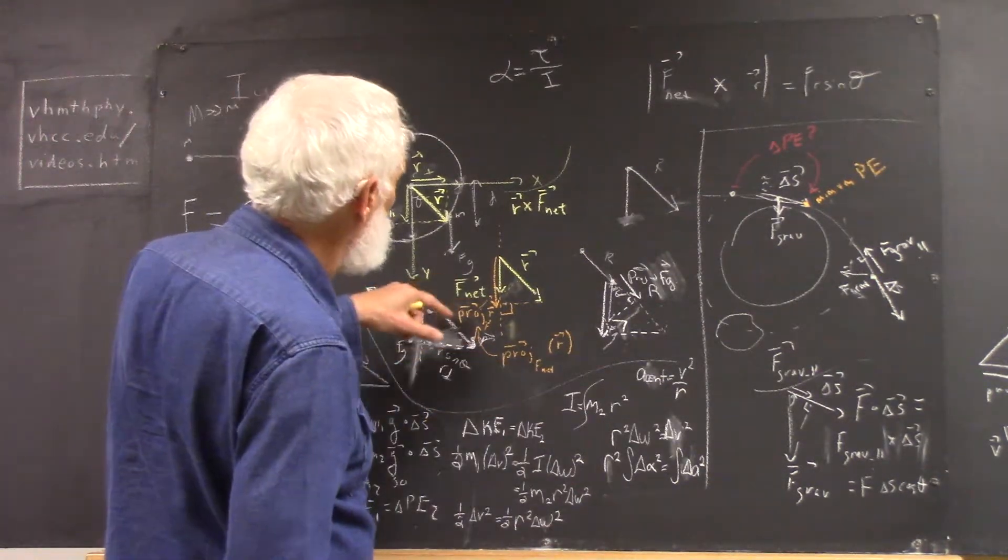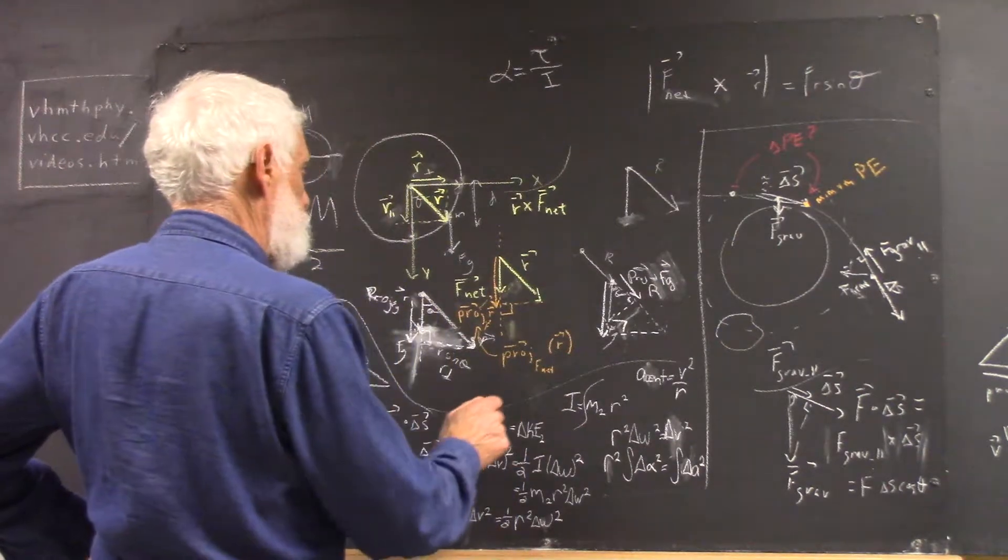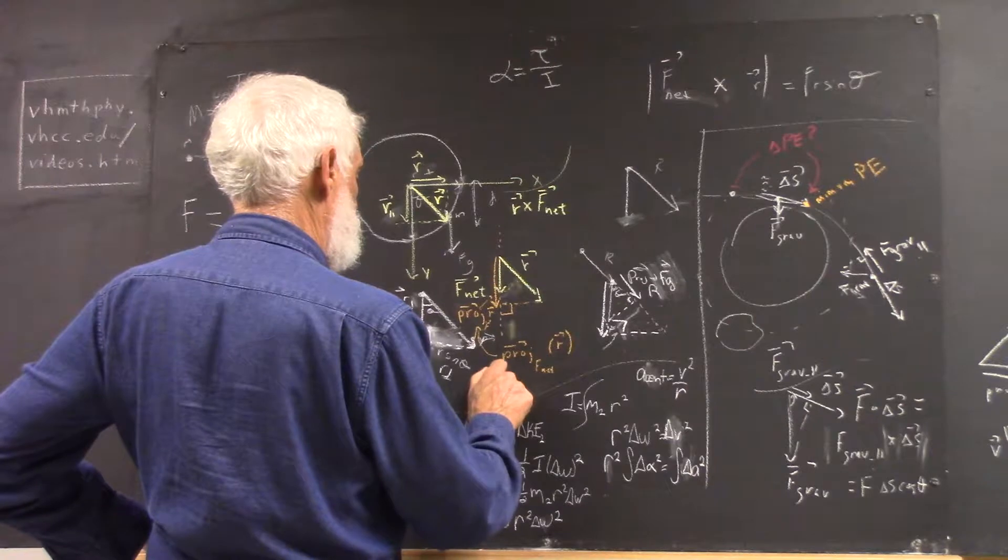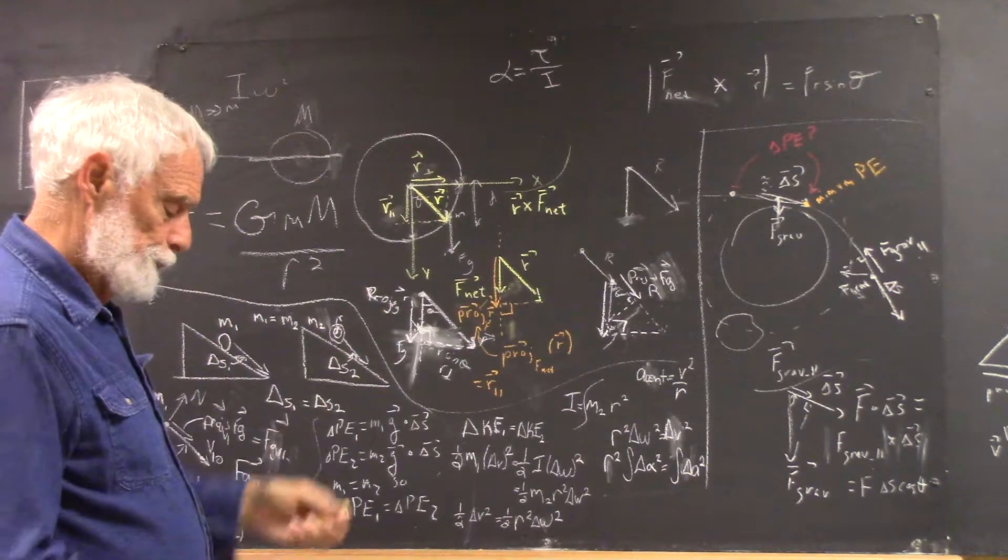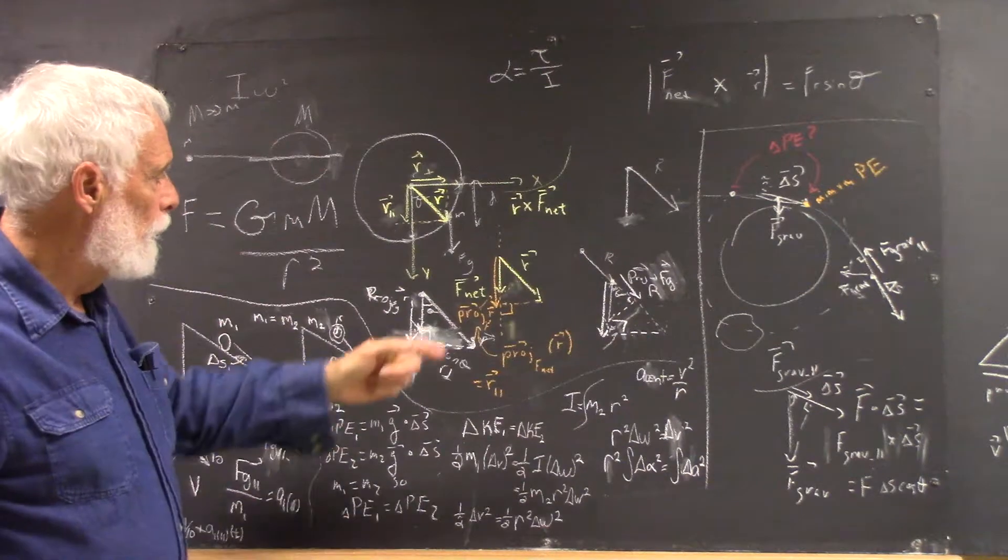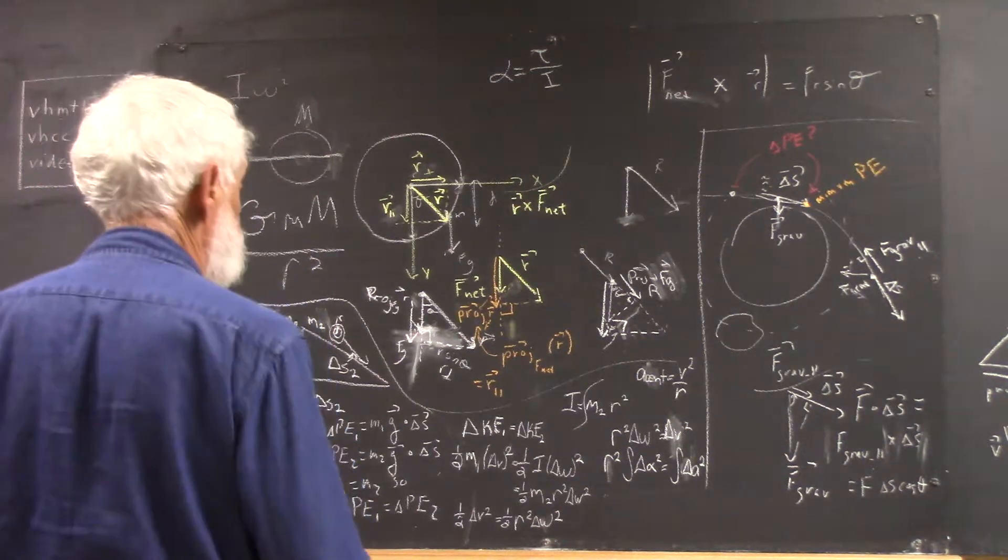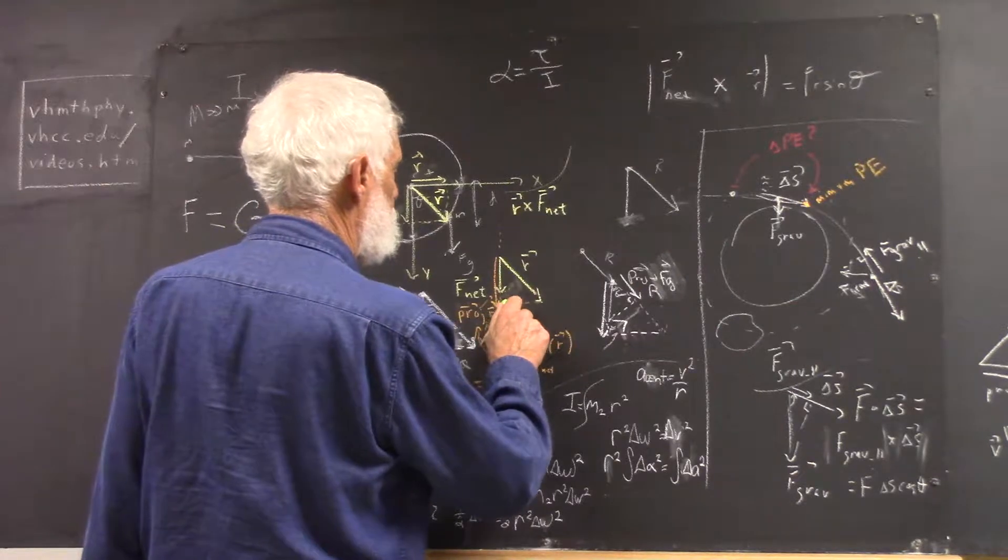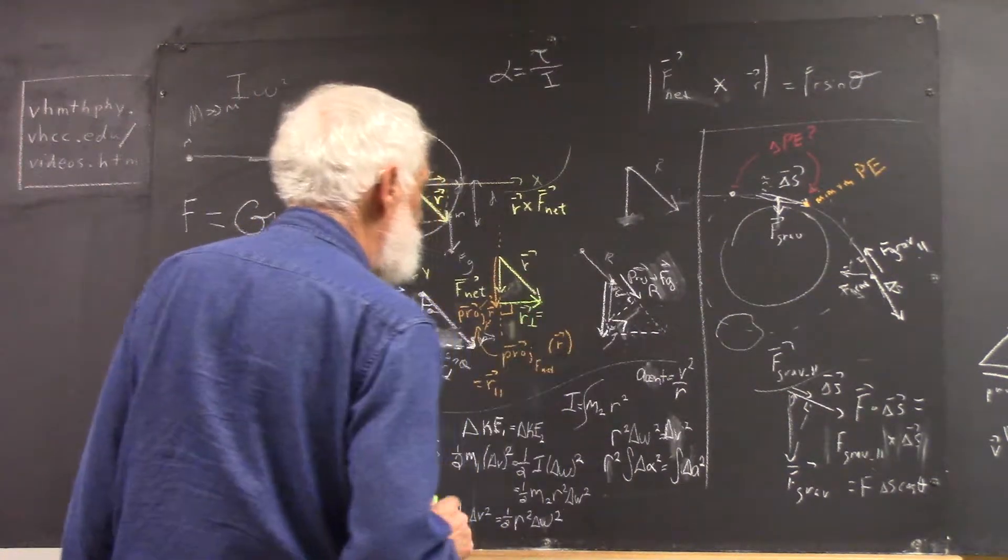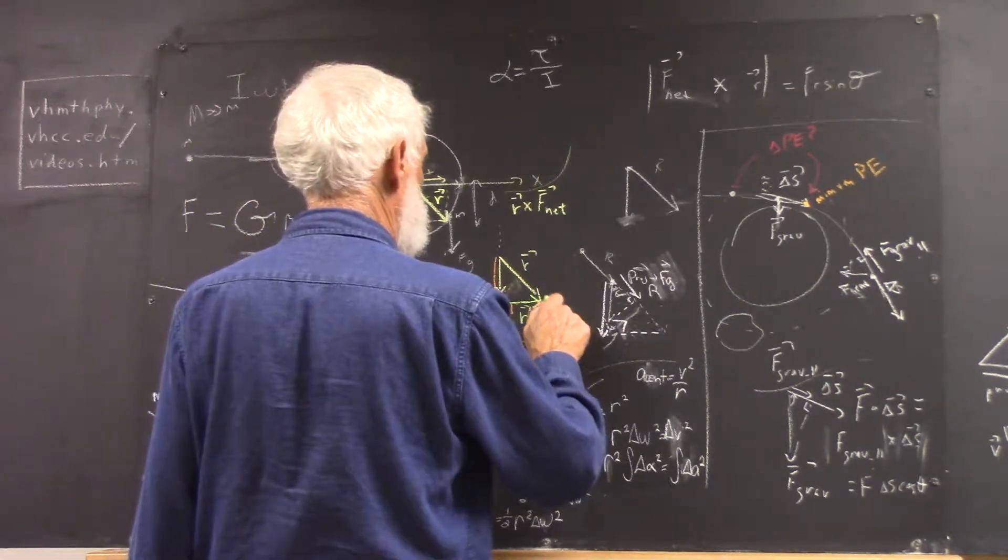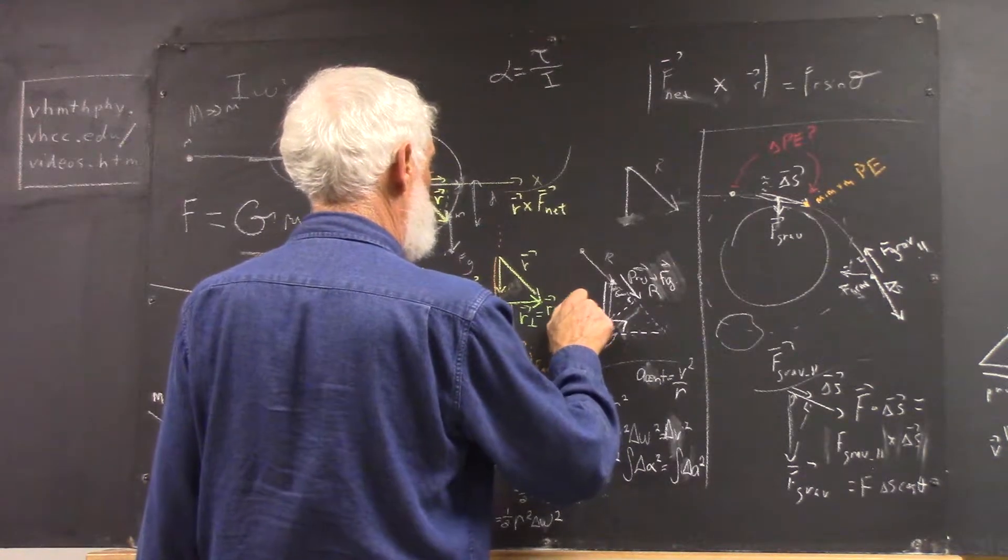I've written it here sort of, but very small. But this is what I've written. That is the component of f-net parallel, I'm sorry, the component of r parallel to f-net. That's our r parallel vector. That would be this vector in the picture. The vector that we want is the component of r perpendicular to f-net. So our r perpendicular vector would be this.